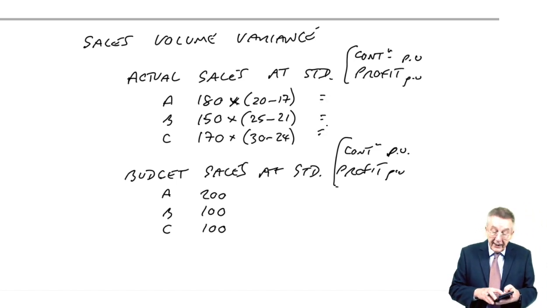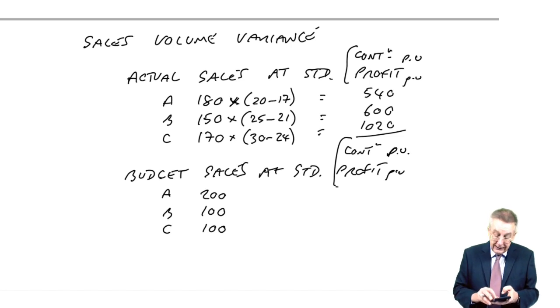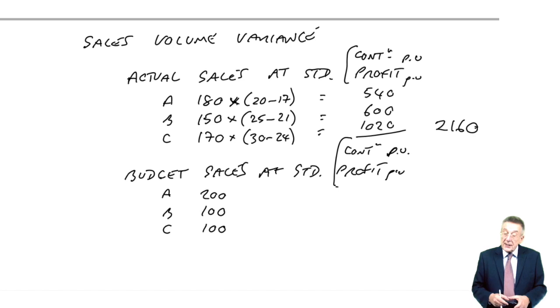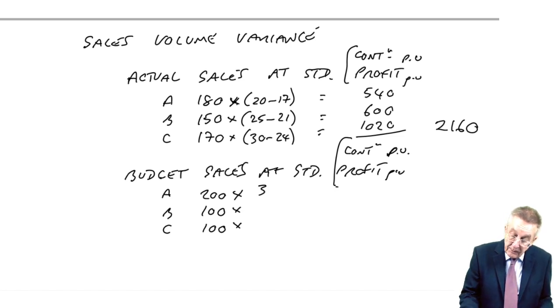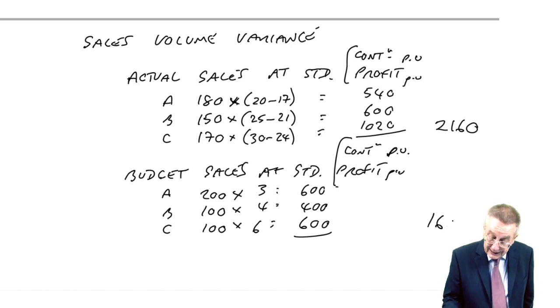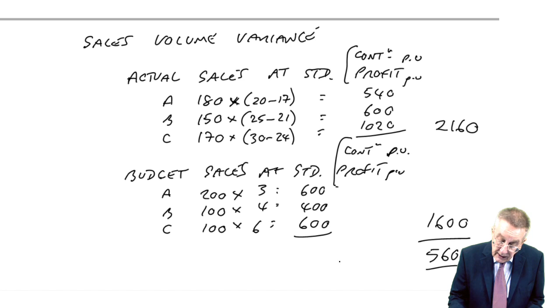So, how much profit would that give us? 180 times 3 is 540, 150 times 4 is 600, 170 times 6 is 1020. So, the total, 2160, compared with budget sales at standard. A, the standard profit is $3 per unit, B is $4 per unit, C is $6 per unit. So, we were expecting a profit of 1,600. So, in fact, we've done massively better here. The sales volume variance is $560 favourable.